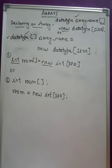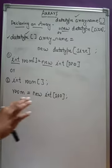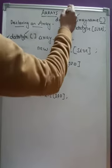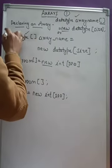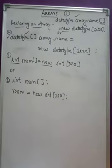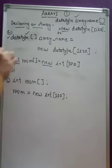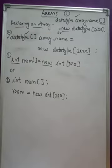This is the particular syntax through which you can declare an array. We have two ways to declare the array. This is the first way and this is the second way — both of them are not much different. Let me discuss the first one.